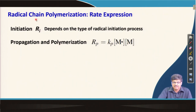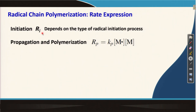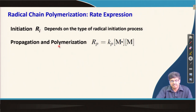In the last lecture, we discussed the rate of Radical Chain Polymerization. We described that the initiation process for R_i depends on the type of initiation one is using, so the rate of initiation R_i also depends on the radical initiation process, which I will discuss after some time. I also discussed that the rate of propagation and polymerization are both similar, because the rate of polymerization is given by the rate of disappearance of monomers from the medium, which is almost governed by the rate of propagation.